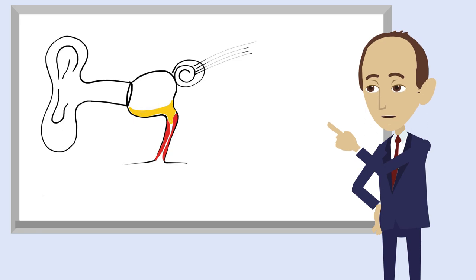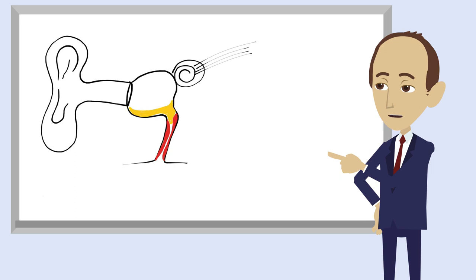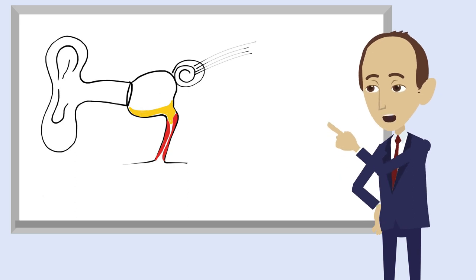When the eustachian tube becomes critically blocked, the mucus that is produced from the lining of the middle ear cannot drain out as before and therefore the mucus starts to fill up the middle ear.